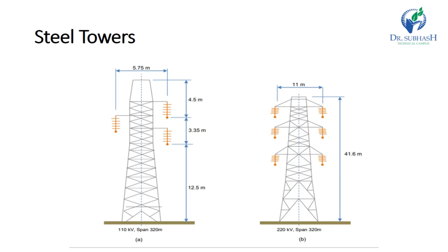Steel towers may be used for long distance transmission and higher voltage. Steel towers have greater mechanical strength, longer life, and can withstand stronger climate conditions. We see in the figure a single circuit tower and a double circuit tower. A single circuit tower has a moderate additional cost to build as a double circuit tower, and it has the advantage of continuity of supply. In case of a breakdown on one circuit, the continuity of supply can be maintained by the other circuit.